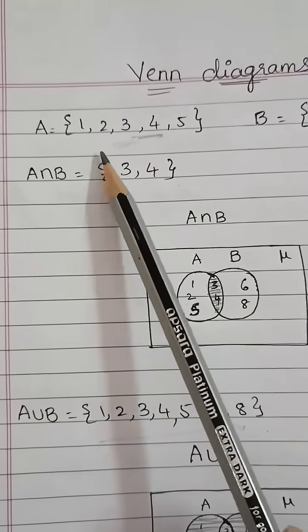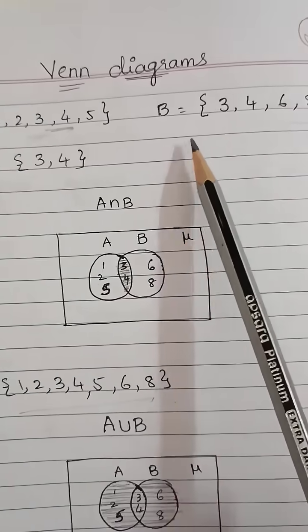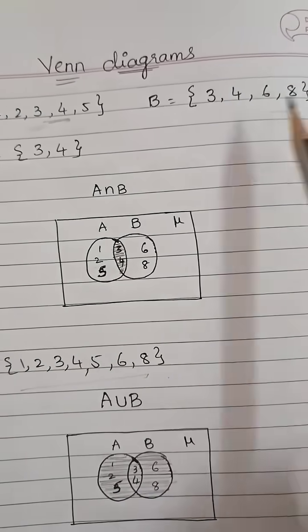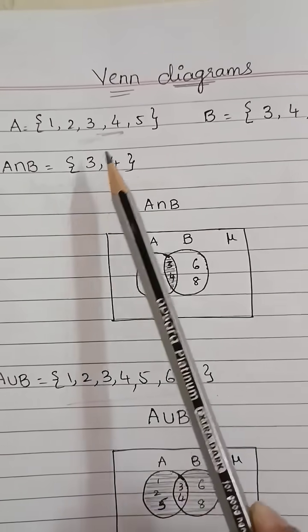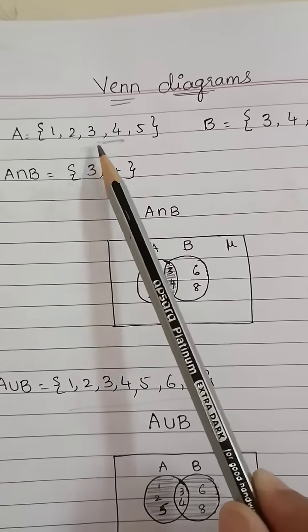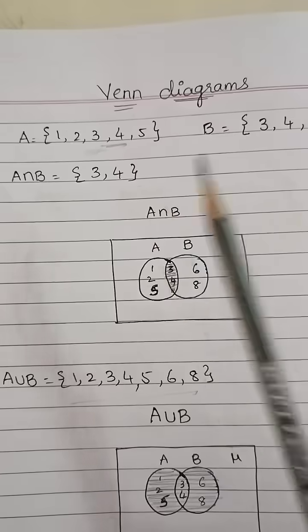Venn diagrams. A is equal to {1, 2, 3, 4, 5}, B is equal to {3, 4, 6, 8}. A intersection B will be the common elements between these two sets: {3, 4}.